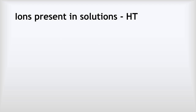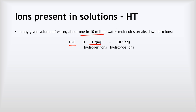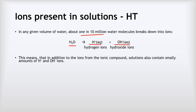Now we're going to look at some higher tier material, which will help us predict the products of electrolysis of aqueous solutions rather than molten ionic compounds. The key thing is that in any given volume of water, about one out of every 10 million water molecules breaks down into ions. So a water molecule spontaneously breaks down into an H+ hydrogen ion and an OH- hydroxide ion. That means in any solution of an ionic compound, we don't only have ions from the ionic compound, but we also have H+ and hydroxide ions from that breaking down of water, and those ions will get involved in electrolysis in the right circumstances.